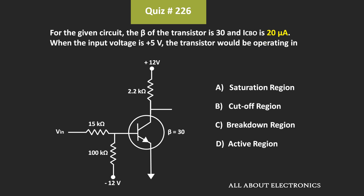When I posted this question previously, the value of ICBO was 20mA. With that value of ICBO, the transistor would definitely operate in the saturation region. So here I have changed the value of ICBO, and for this new value, let's find out in which region this transistor is operating.